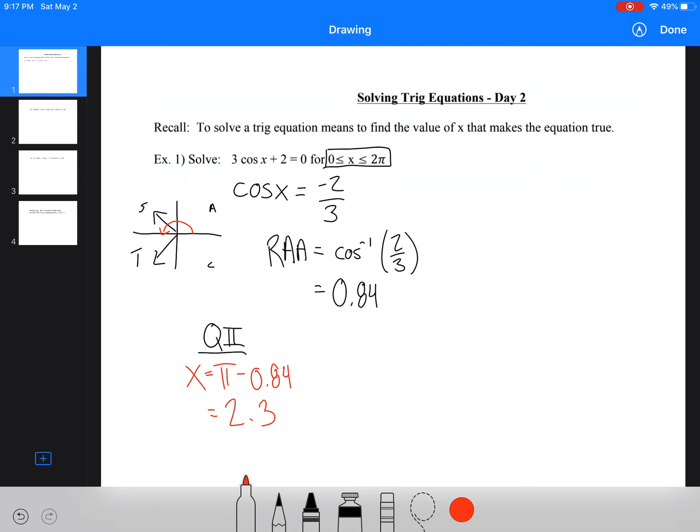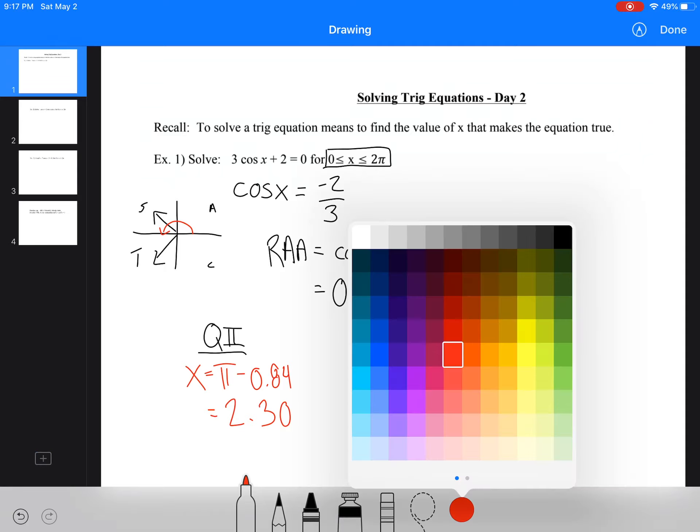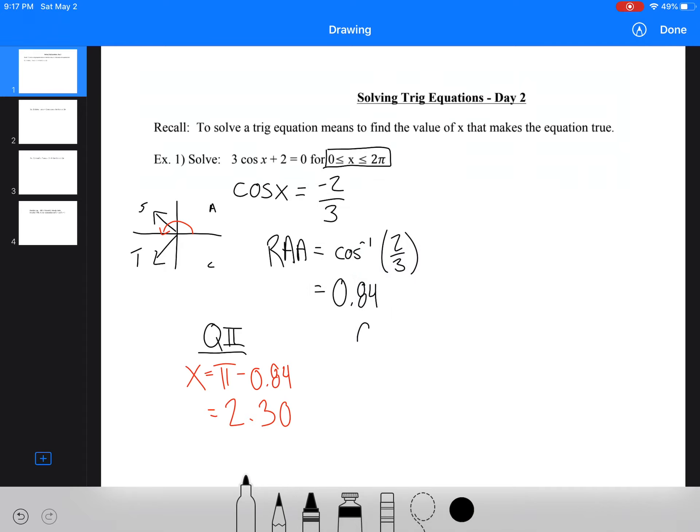Now pi minus 0.84 is going to give us 2.3. It's 2.3005, a whole bunch of decimals. We'll leave it as 2. We'll go 2.30. If we're in quadrant three, rather than doing 180 plus, we're going to have x equals pi plus 0.84.